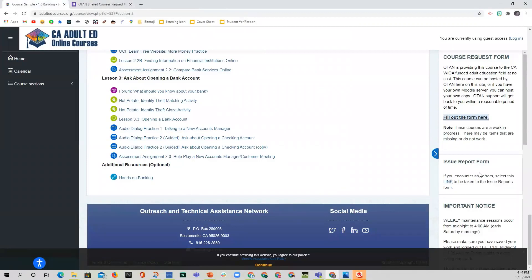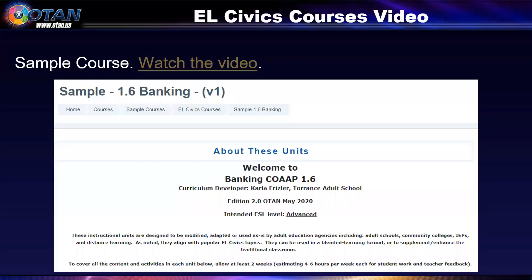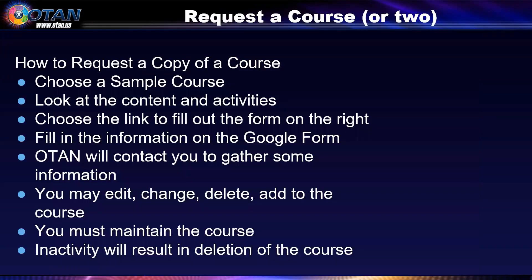If you find an error in any of the courses, there is a link under the request form — please help us maintain quality courses by pointing out any mistakes you find. To request a course: first, choose a sample course and look at the content and activities. Choose the link to fill out the form on the right and fill in the information on the Google form. OTAN will contact you to gather some information. You may edit, change, delete, or add to the course, but you must maintain it, and inactivity will result in deletion of the course.